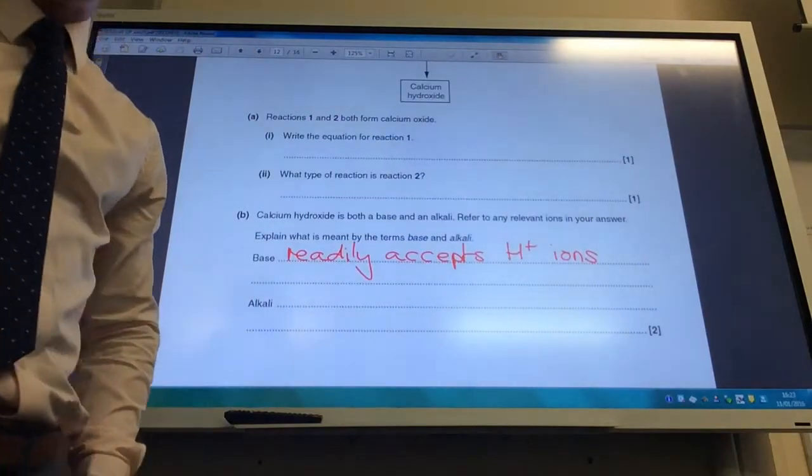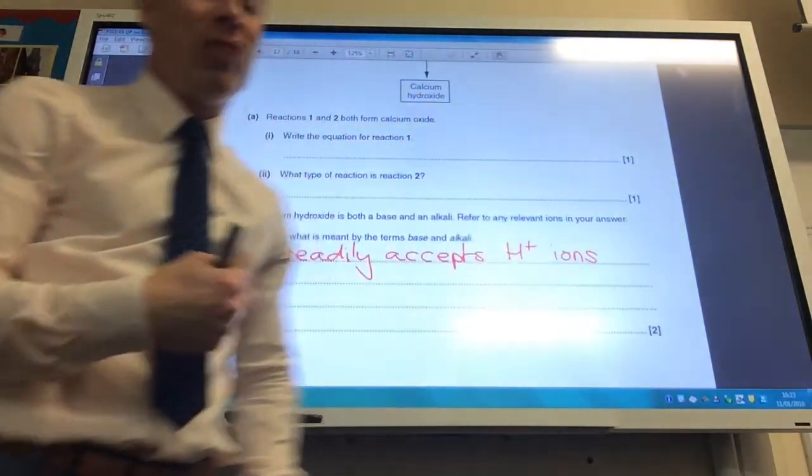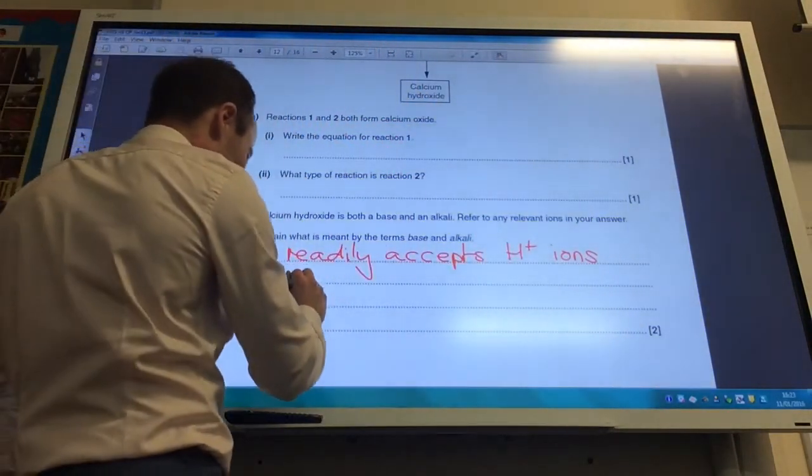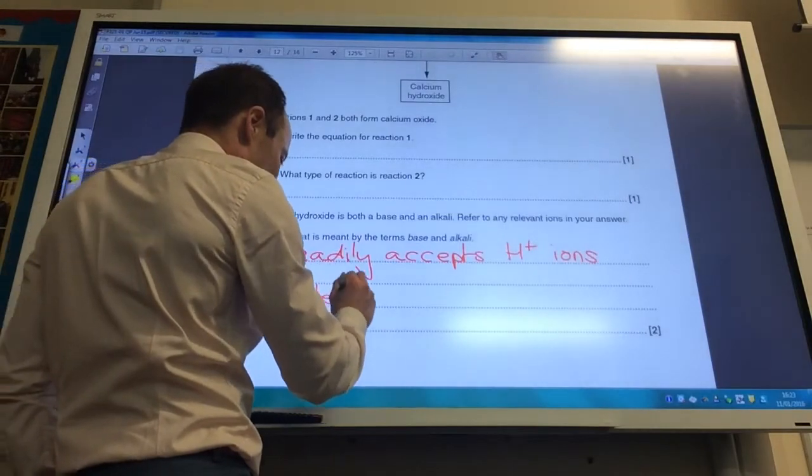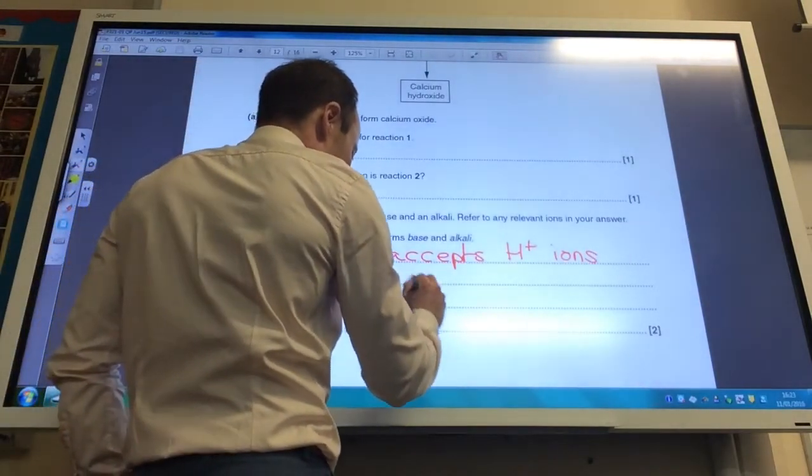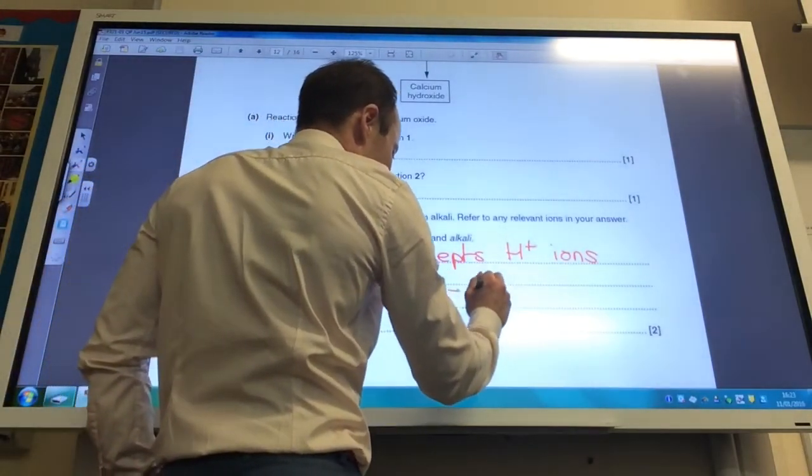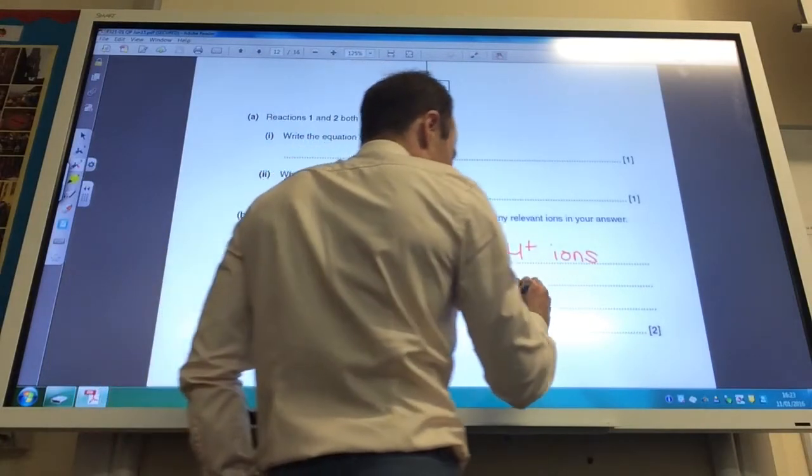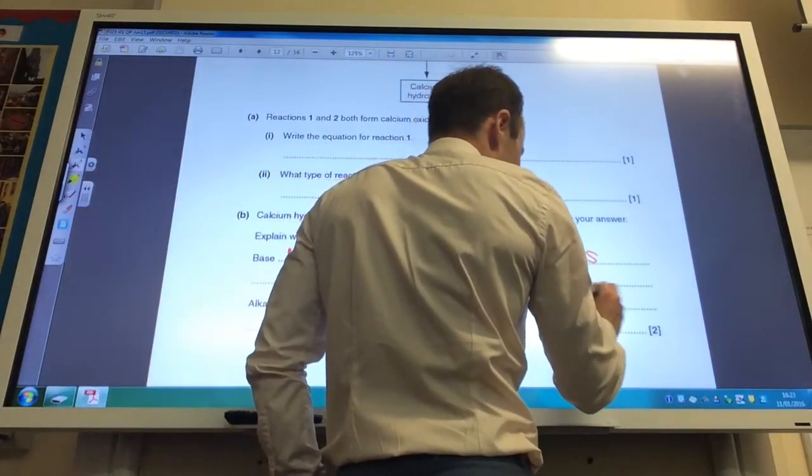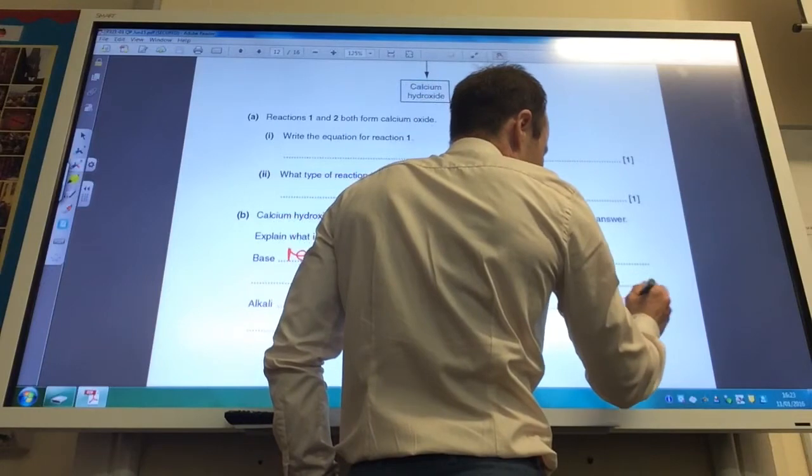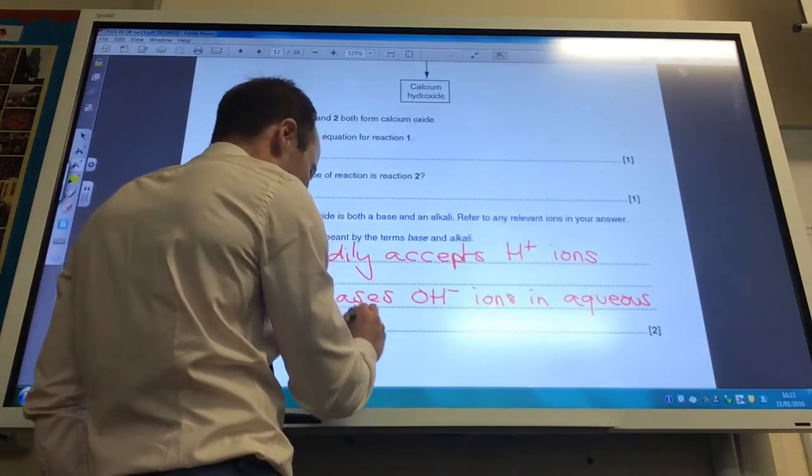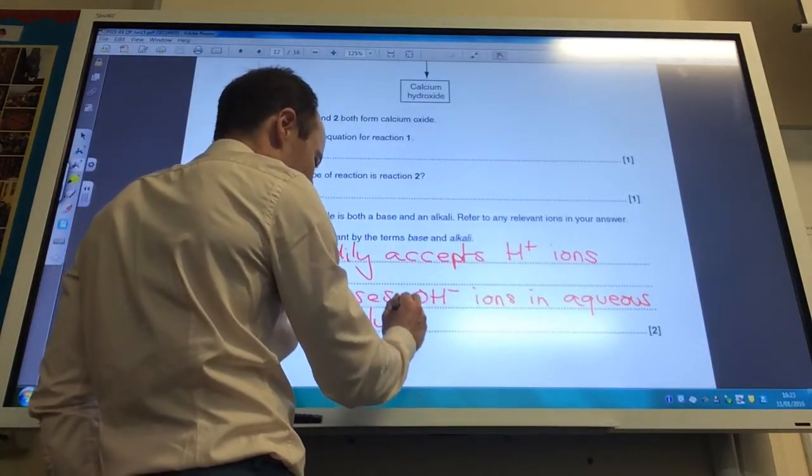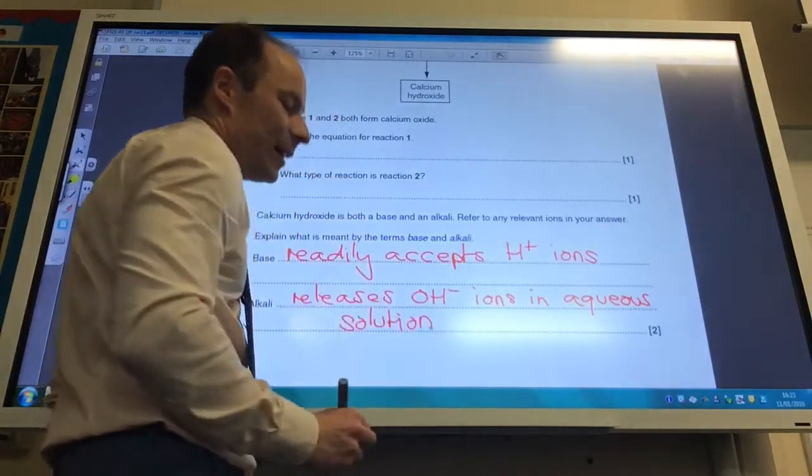What about an alkali? Well, an alkali readily releases OH minus ions in aqueous solution. So when you dissolve an alkali up, it releases OH minus ions. There you go.